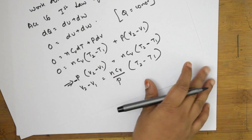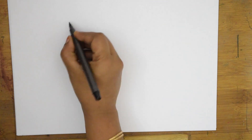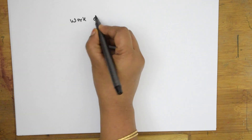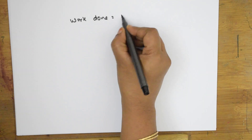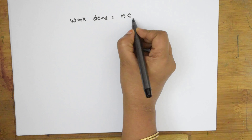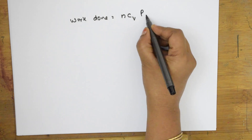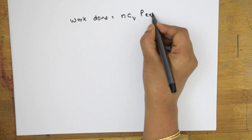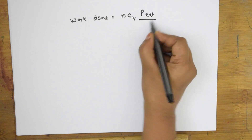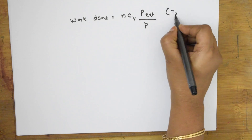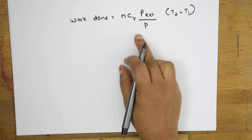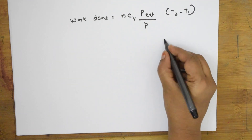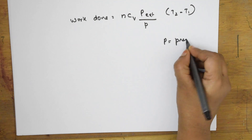Substituting into the work done equation, we get: W = n·Cv·(p-external / p)·(T2 minus T1), where p is the pressure of the gas.